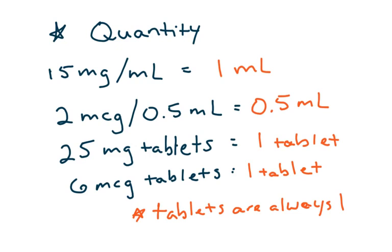So, for example, just to break down a few things, if it says for the quantity, 15 milligrams per milliliter, the slash means per, that means that there's 15 milligrams in one milliliter. For the one that says 2 micrograms per 0.5 milliliter, then the quantity is 0.5 milliliters.